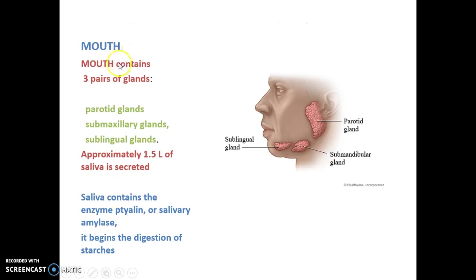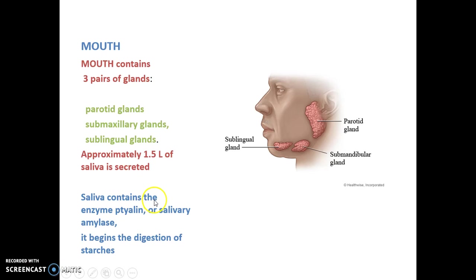Let's look at the mouth. The mouth contains three pairs of glands: the parotid gland, which is a salivary gland, the submaxillary gland, and the sublingual gland. Approximately 1.5 liters of saliva is secreted daily. Saliva contains the enzyme ptyalin, or salivary amylase, which begins the digestion of starch.